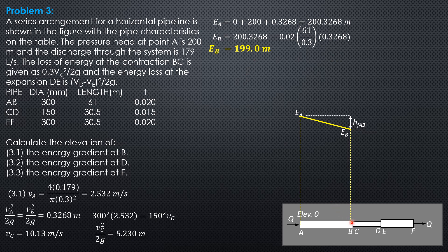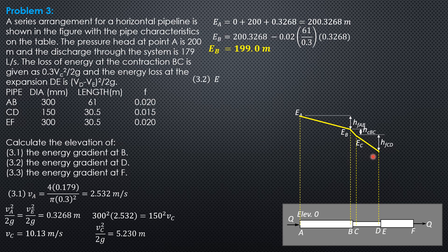From B to C, we have a sudden contraction. The head loss at the contraction is 0.3 times velocity head at C. Then from C to D, we have head loss due to pipe friction in pipe CD. The energy at D equals 199.0 minus head loss due to contraction in BC minus head loss due to pipe friction in CD.